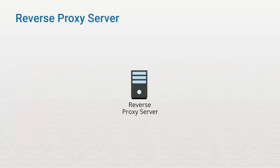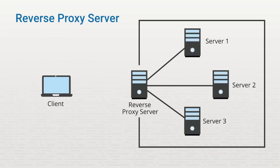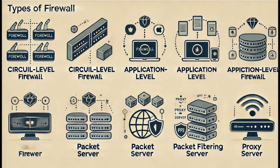For example, a reverse proxy server sits in front of web servers. When a client requests access to one of those servers, the request first goes to the reverse proxy, which looks at the request and connects to the correct server — creating a link between the client and the server. Proxy servers and reverse proxy servers operate transparently; the client doesn't know it's connecting to a proxy. Reverse proxy servers can also cache information and balance the load placed on internal web servers. In this lesson, we learned about different types of firewalls and the different ways you can implement a firewall on a network.